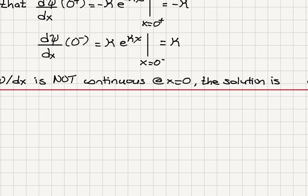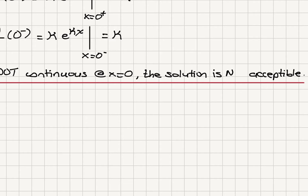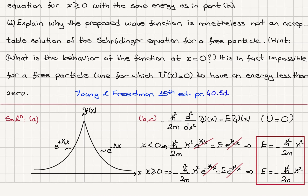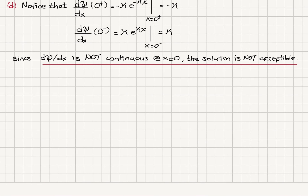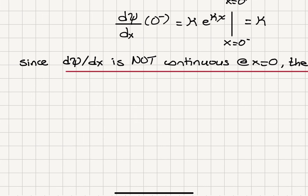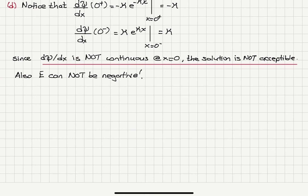The derivative of the wave function is not continuous at x equals zero. But one of the requirements is that the wave function and its derivative must be continuous. So the solution is not acceptable. Additionally, the energy we calculated is negative. Since the potential energy is zero, we only have the kinetic energy term, and kinetic energy cannot be negative. Therefore, this wave function is not an acceptable solution of the Schrödinger equation.